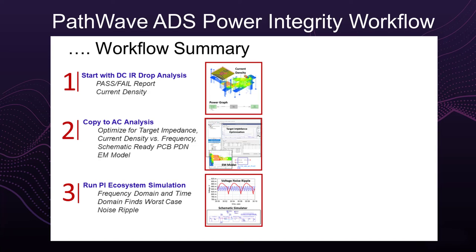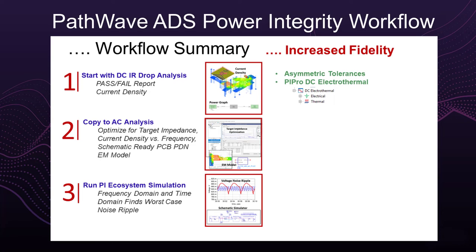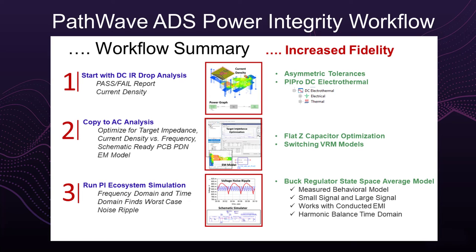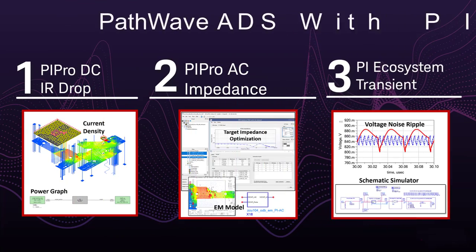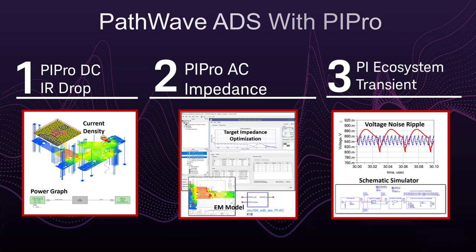More extensive analysis of design margins can be done in the first DC analysis step by exploring VRM and sync asymmetric tolerances along with improved accuracy of DC electrothermal. The second AC analysis step can benefit from flat matched impedance design to improve capacitor placement, and expanding the EM model to include a VRM switching model enables conducted EMI simulations. The third PI ecosystem step can be expanded to include state space average VRM models with small signal and large signal behavior suited for fast harmonic balance. If you want to try this three-step DC-AC transient PI workflow using PathWave ADS with PI Pro, please follow the links in the description below for requesting an ADS demo license and downloading the ZCU-104 workspace example.